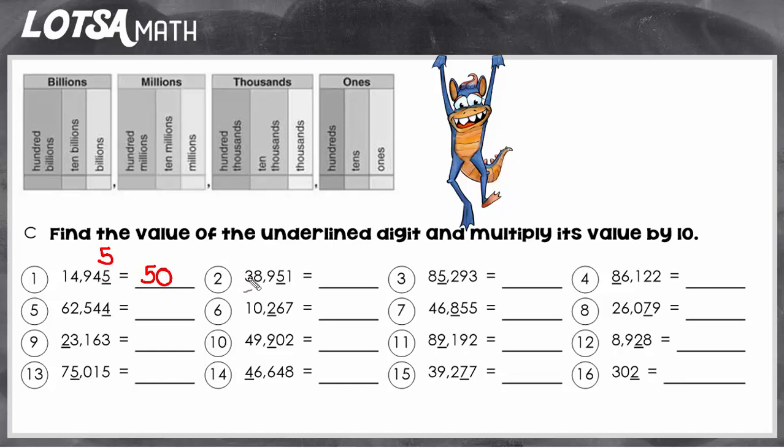Let's look at the next example. So this time we have a 5, but this time it's in the tens place. So the value of this 5 is actually 50 already. So once we have the original value, we're going to multiply it by 10. So we're going to do 50 times 10.